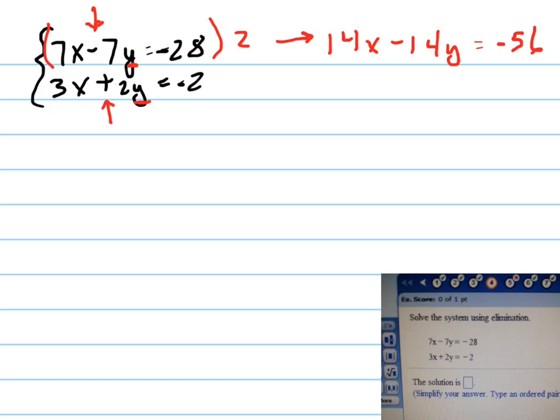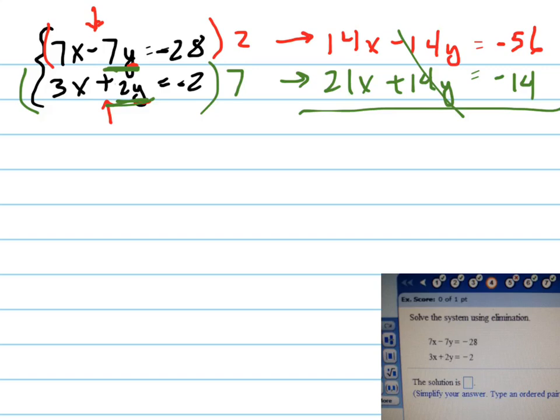And I'll multiply the second equation by 7. Remember you're multiplying everything by 7. The reason I did that, choosing 2 and 7, is because I want to make these two terms the opposites of each other. Because then when I add them straight down, you'll see that the y's go away. I get 35x equals negative 70.